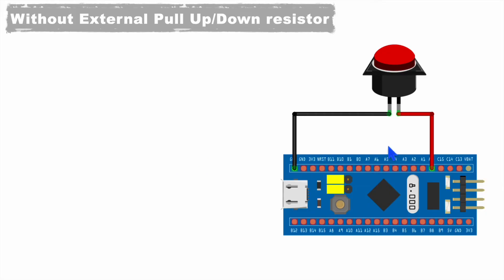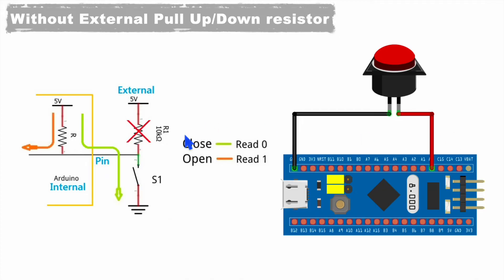Very often we do not use an external pull-up resistor. One end of the switch is connected to ground and the other end to the input pin of the microcontroller, with no external pull-up resistor at all. In this case, we configure the pull-up resistor internally through software. We set this input pin to have an internal pull-up resistor. This is configurable — we can configure it as either pull-up or pull-down with the help of programming. This approach is also used in the industry.